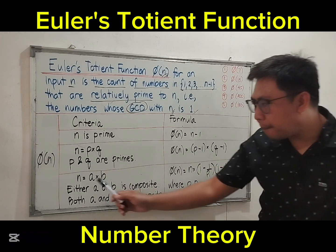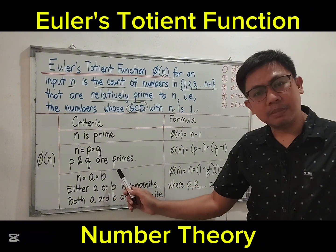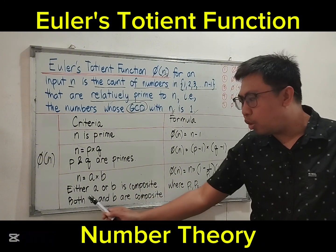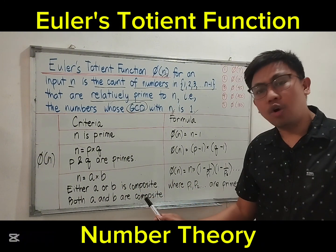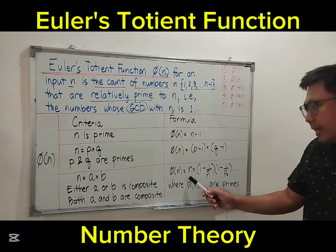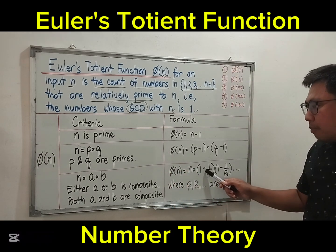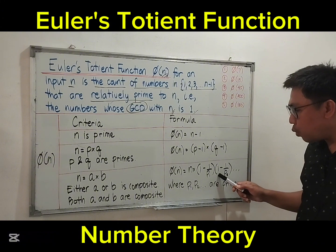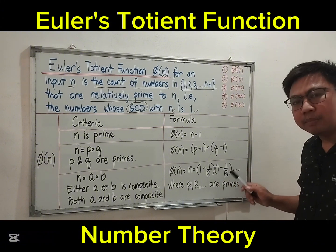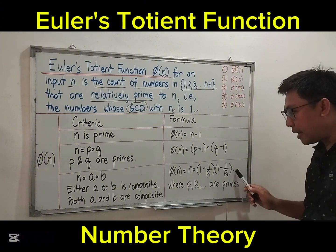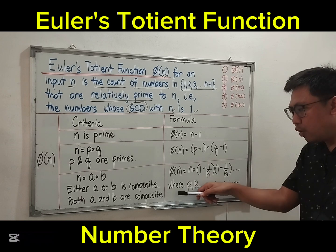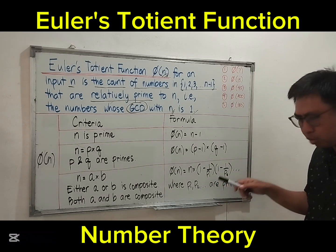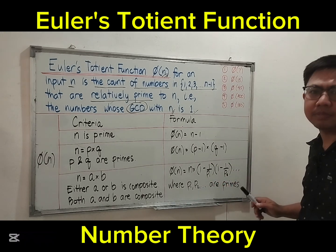The last formula — case 3: if n equals a times b, where either a or b is composite or both are composite, then the formula is n times (1 minus 1 over p₁) times (1 minus 1 over p₂) and so on, depending on the number of prime factors p₁, p₂ up to pₙ.